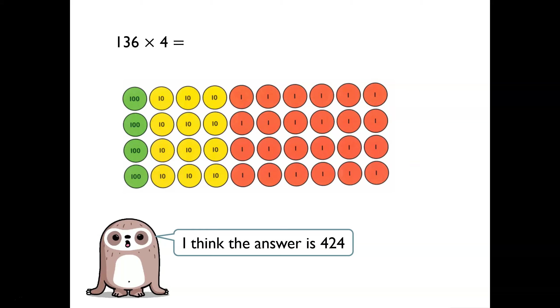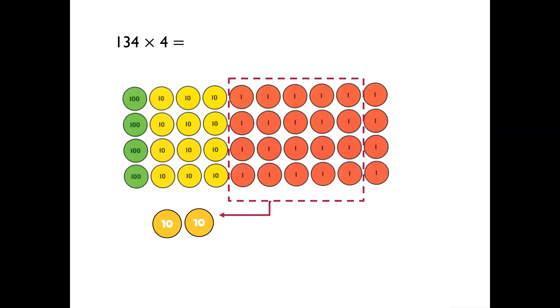Let's have a look together. We can see 136 represented with place value counters. There are 4 rows because we are multiplying by 4. Start with the smallest place values, the ones. We can see that we are going to need to exchange. There are 24 ones. So we will exchange 20 ones for 2 tens, just like this. And we will leave behind 4 ones.